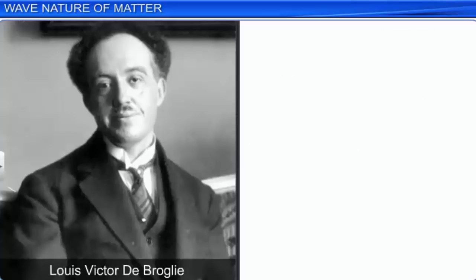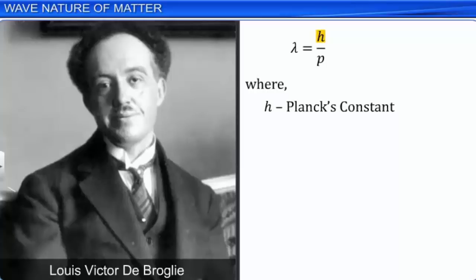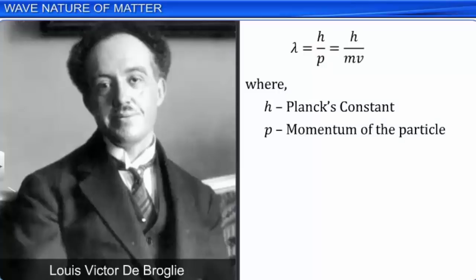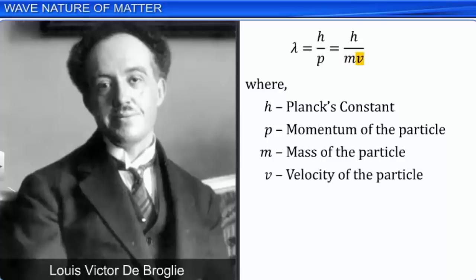De Broglie proposed that the wavelength λ associated with a particle is equal to h divided by p, where h is the Planck's constant and p is the momentum of the particle. But p is equal to m multiplied by v, where m is the mass of the particle and v is the velocity of the particle. This equation is called the De Broglie equation, and λ is called the De Broglie wavelength.